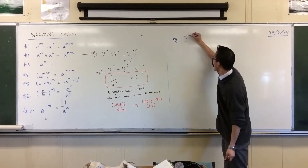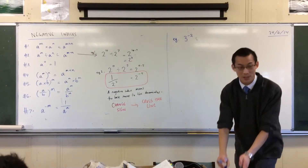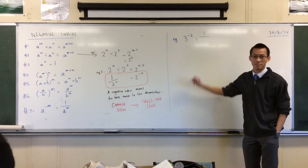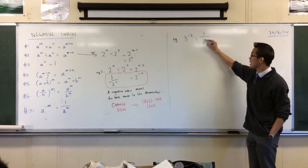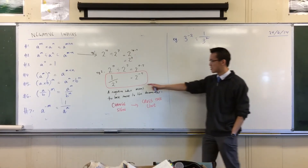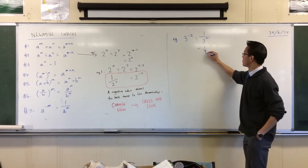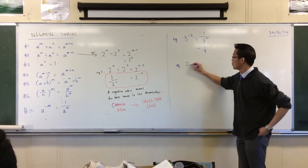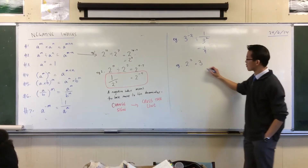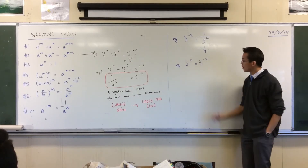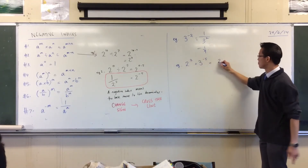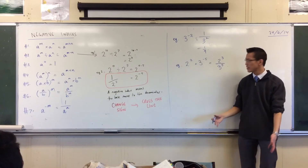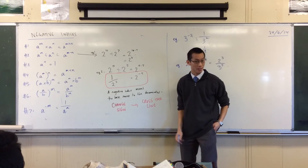Easy example. How about 3 to the power of negative 2? If I ask us to evaluate that and find out what it's equal to, what should I write? Well, the sign there is negative, so that means I'm going to write a fraction. What's on the denominator? It'll be 3 squared. Can you see that? See how it's similar to this? Just the numbers are slightly different. So that's 1 over 9. Do you always put 1 on top? Yeah, that's right. And let's do another example: 2 cubed times 3 to the power of negative 5. This one's a positive power so it stays on top — 2 cubed. But this is a negative power, so it's going to go down the bottom. When you see these negative indices, what you really should be thinking about is fractions.